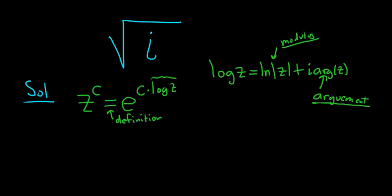So we have the square root of i. We can write that as i to the one-half. So now we can use our definition. This is equal to e to the one-half log i. Now we just have to work out log i, so this is equal to e to the one-half.